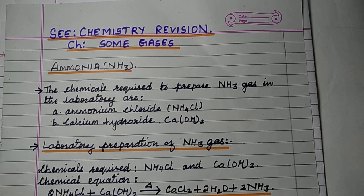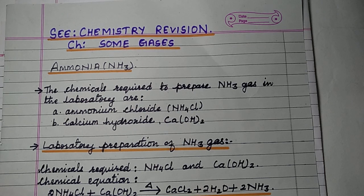You are watching a video on SEE examination preparation, grade 10, subject science. This is a revision of the chemistry chapter on some gases; this content is meant for examination preparation only and does not give a complete explanation of the chapter. Topics and questions mentioned here have been asked in previous examinations. In part one we will study ammonia gas, and carbon dioxide gas will be revised in part two.